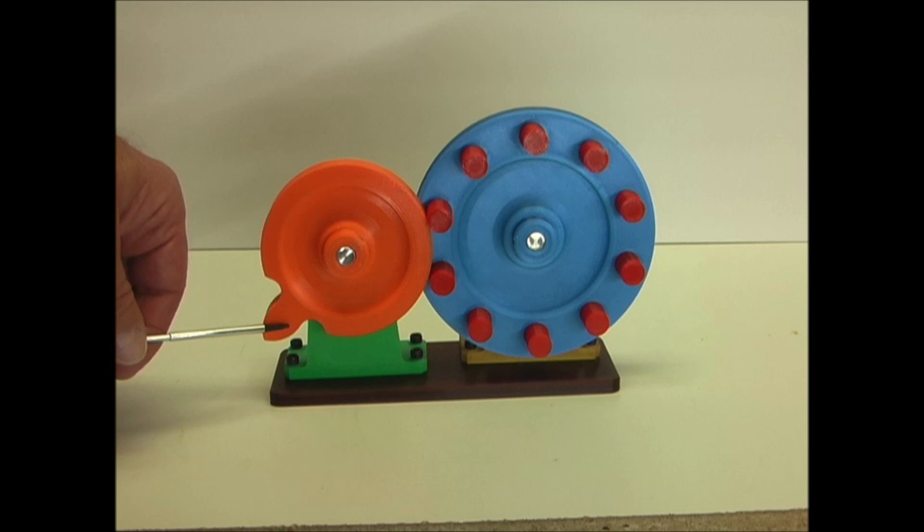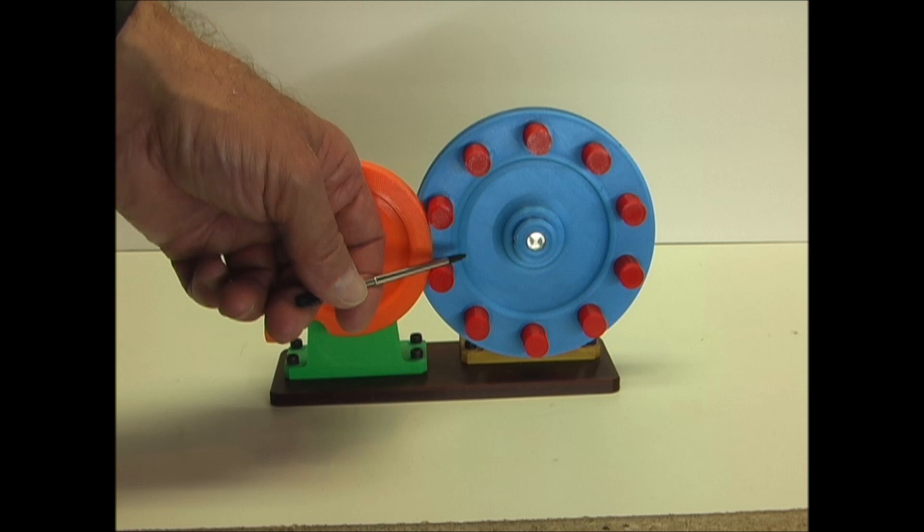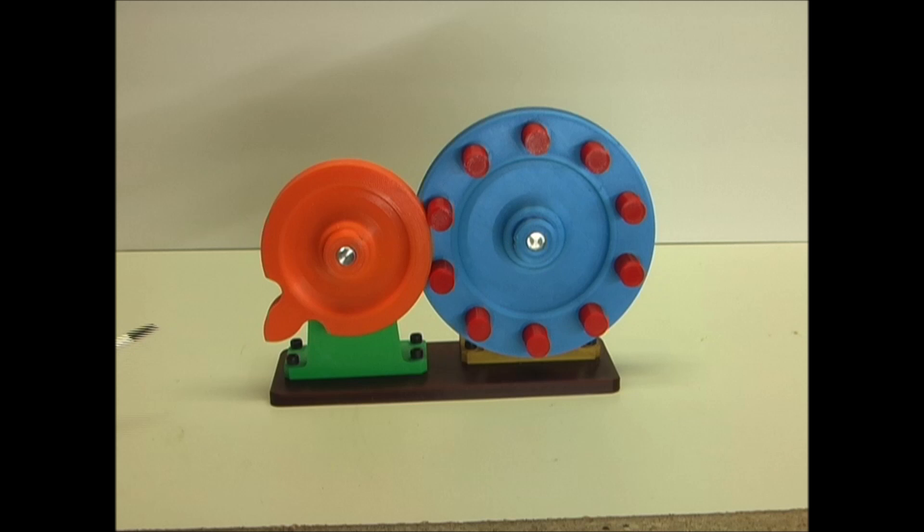So this one has a driving wheel with a single indexing finger, and it does not have a slot on here. The indexing finger advances the driven wheel in increments. In between rotations, the driven wheel is prevented from turning by two pins that are tangent to the outer diameter of the driving wheel.